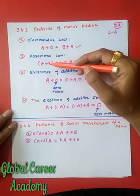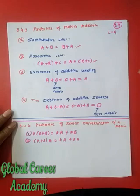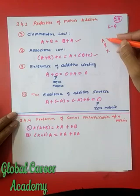Second is associative law. In bracket A plus B, plus C — or first you add B and C, then add A — the answer remains the same. So (A+B)+C = A+(B+C).